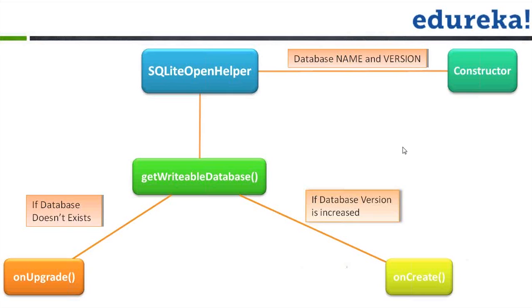Any doubts or questions? These methods are called when we install the app or on the first call for the DB. For example, if you install the application, it will call onCreate. Then if you upload a new APK to the Google Play Store and the user downloads the latest version, it will check the already installed database version. If the latest APK has a higher database version, it will directly call onUpgrade. If the version is the same, it will do nothing.